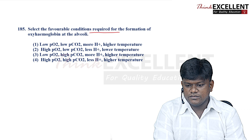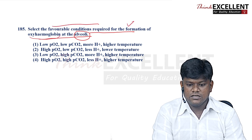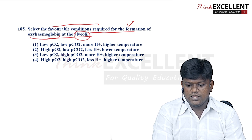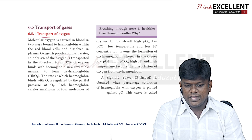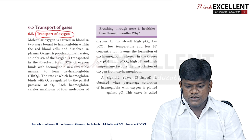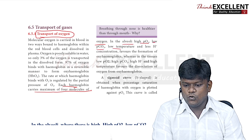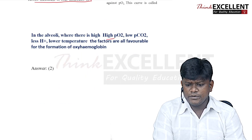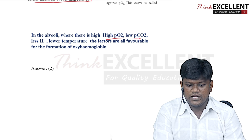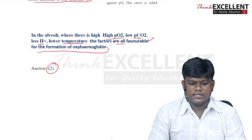Question 185: select the favorable conditions for formation of oxyhemoglobin at the alveoli. Each hemoglobin carries maximum 4 molecules of oxygen. At the alveoli, high PO2, low PCO2, low temperature, and less concentration of H+ ions favor the formation of oxyhemoglobin. Option 2 — high partial pressure of oxygen, low partial pressure of CO2, less H+ ions, and lower temperature — is the right answer.